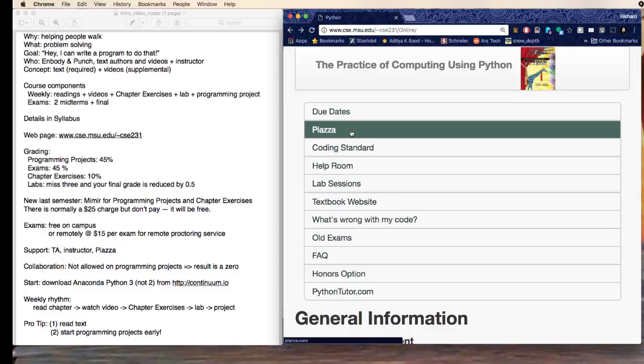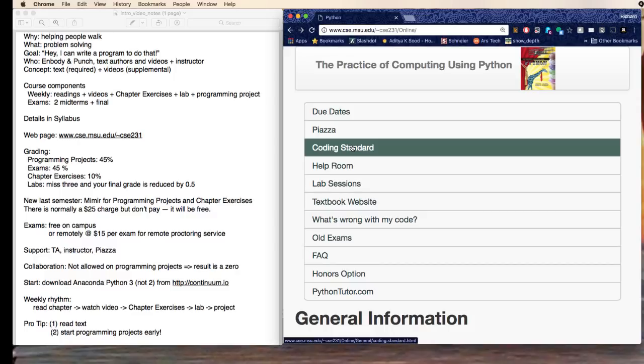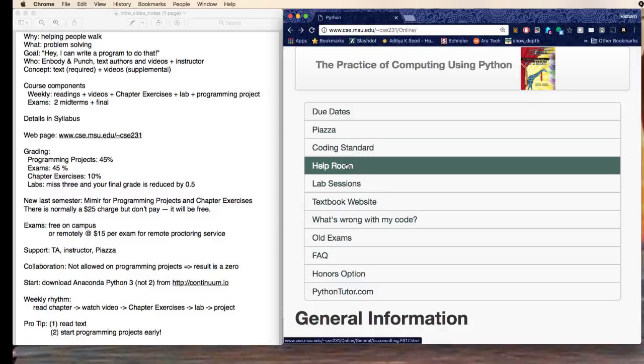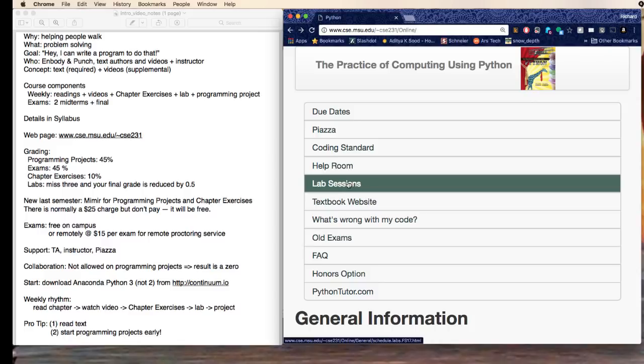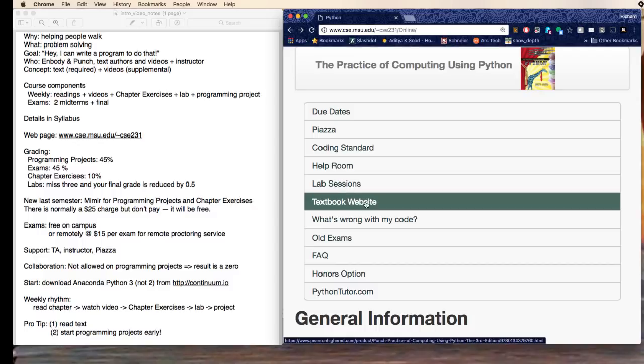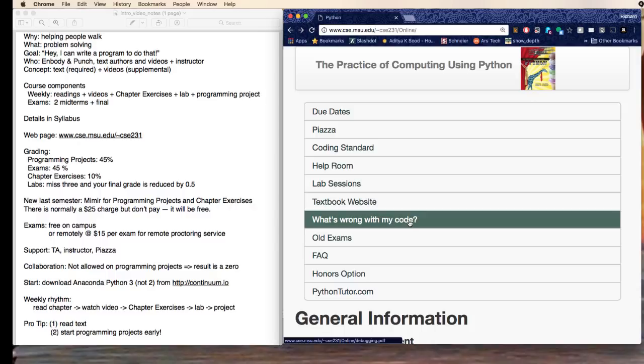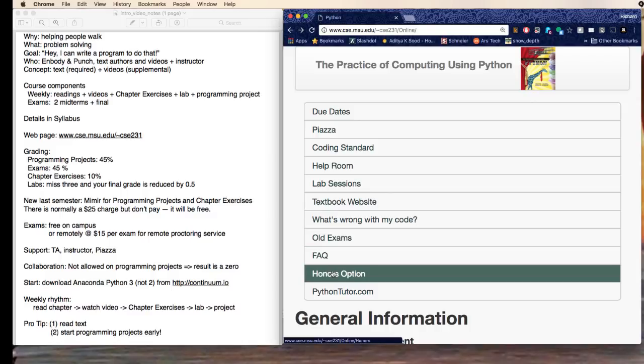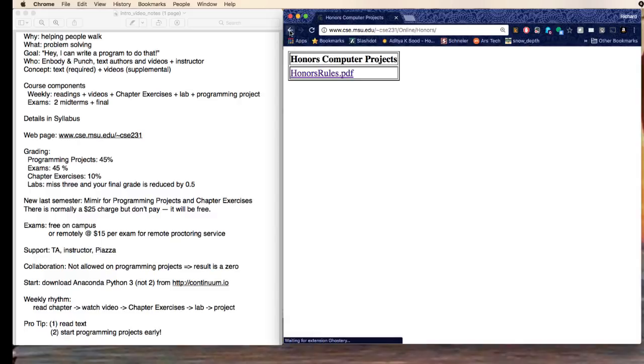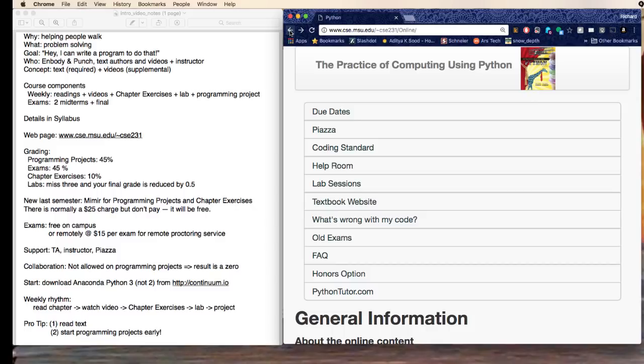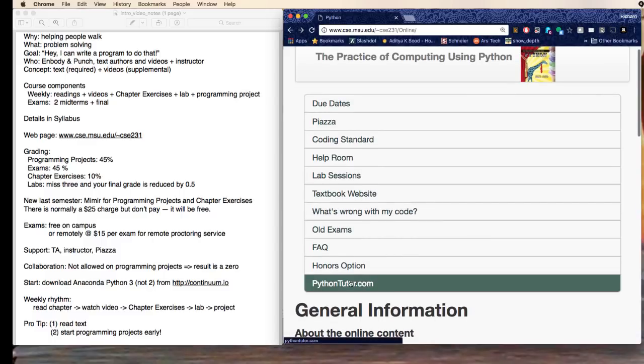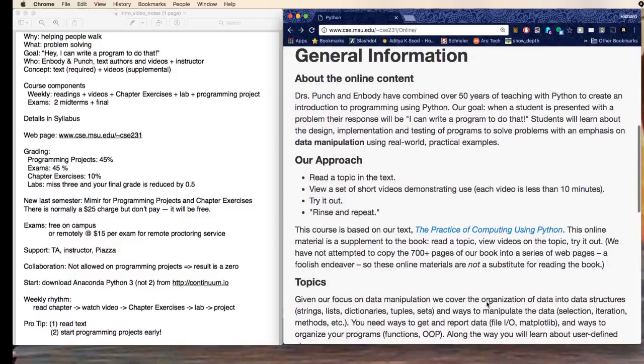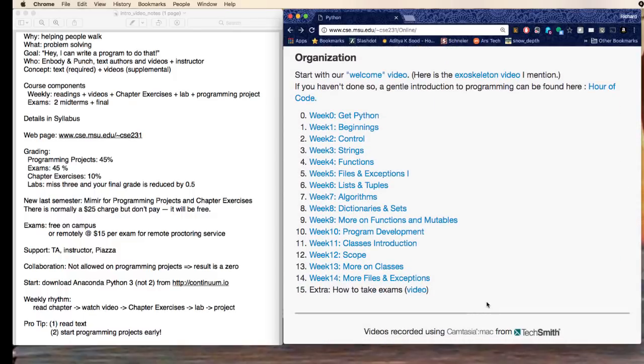And there is a due dates page and the due dates tell you what you have to do every week. The online content has things like the due dates page, Piazza which I'm setting up this afternoon, there's a coding standard that's important for when you are writing code, there is a help room with a schedule, there's a link to the lab sessions, there is a website for the course, there's help finding what's wrong with your code, old exams really handy to prepare for exams, there's some frequently asked questions, there's a link to the honors option, and Python tutor.com is just a handy reference point.